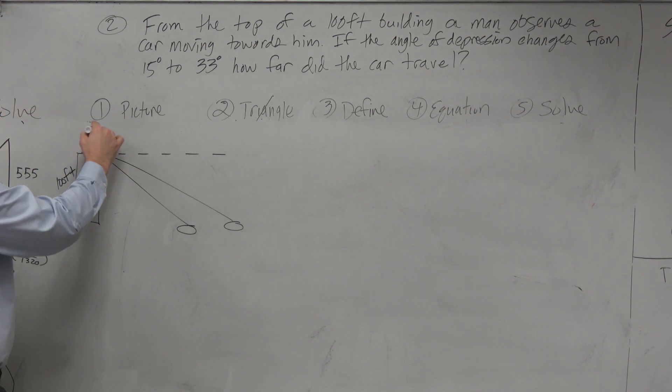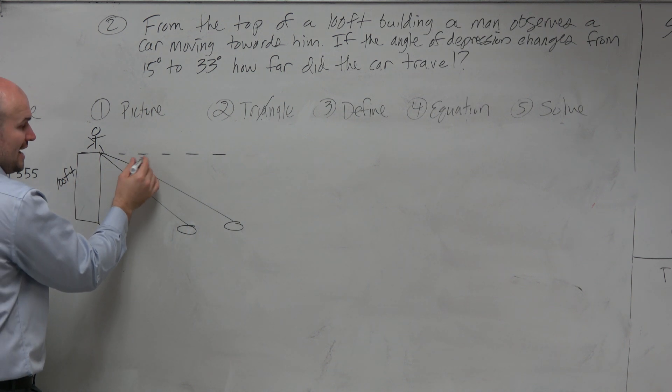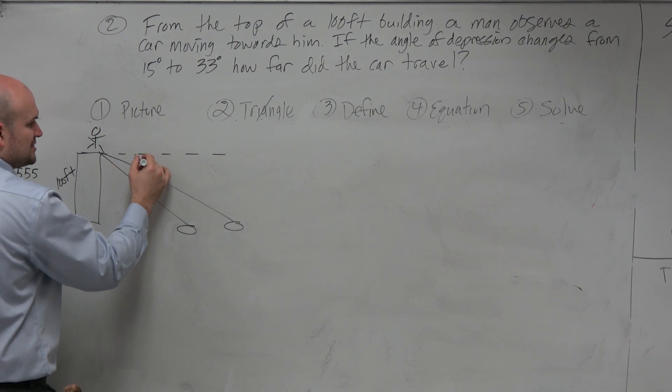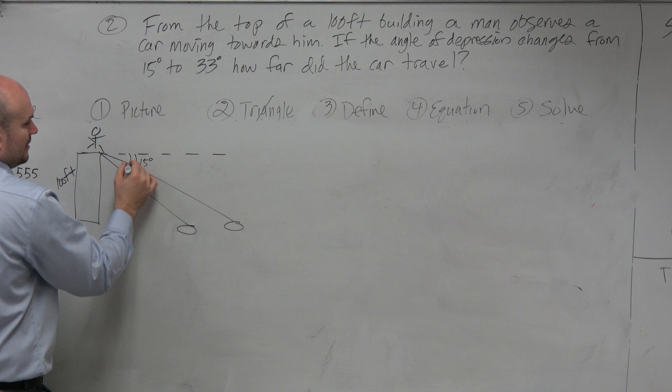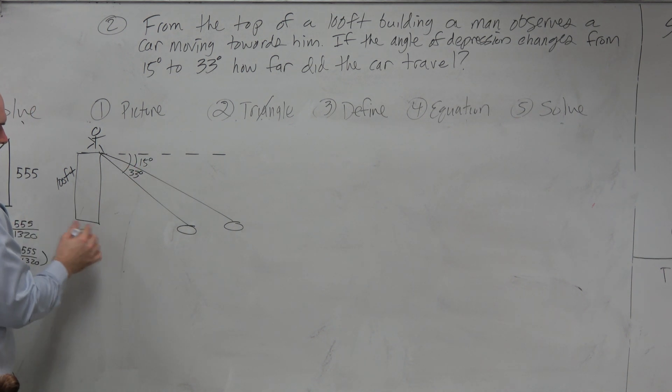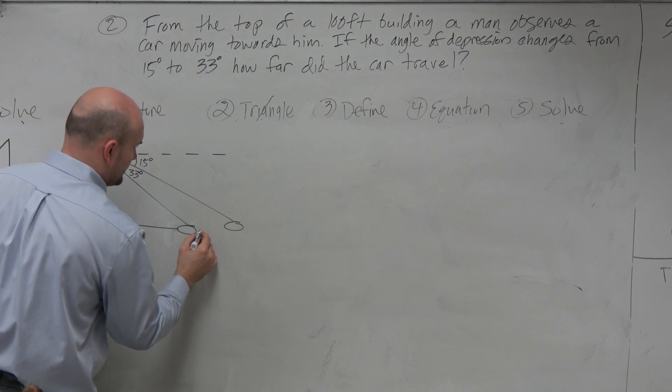So you wouldn't want to say from his eyesight. You wouldn't want to say, like, from here. Because then we don't know the height of the man. Right? So we couldn't add that. So we're going to have to go from the top of the building. And therefore, we have two angles of depression. We have 15 degrees here. And then we have 33 degrees here. All right? And then, obviously, we have the ground come around here.